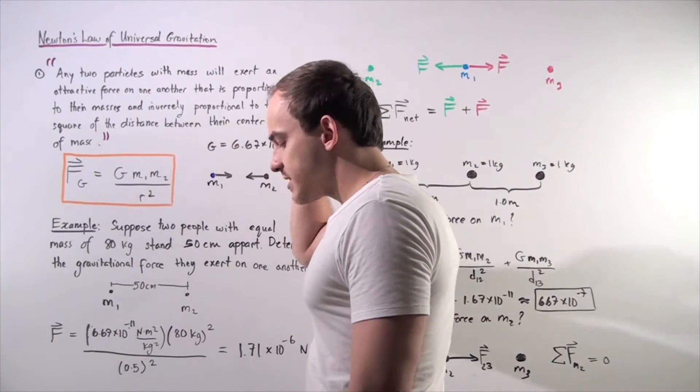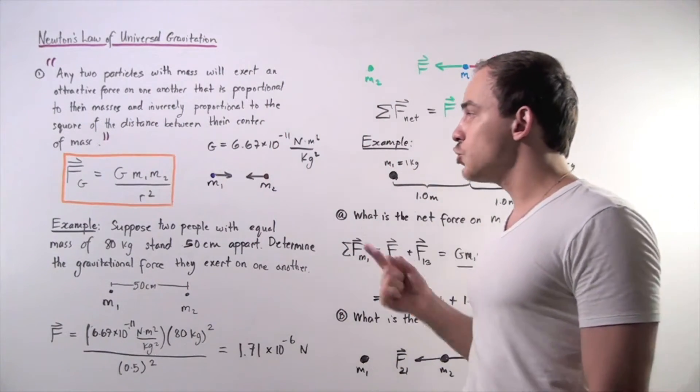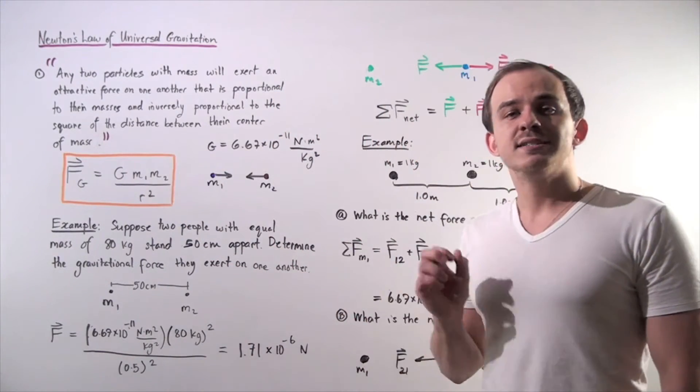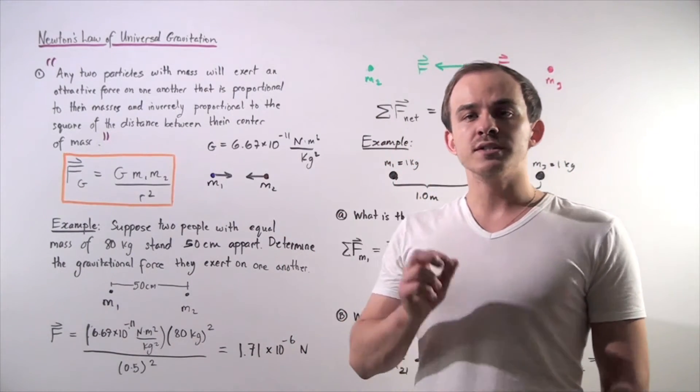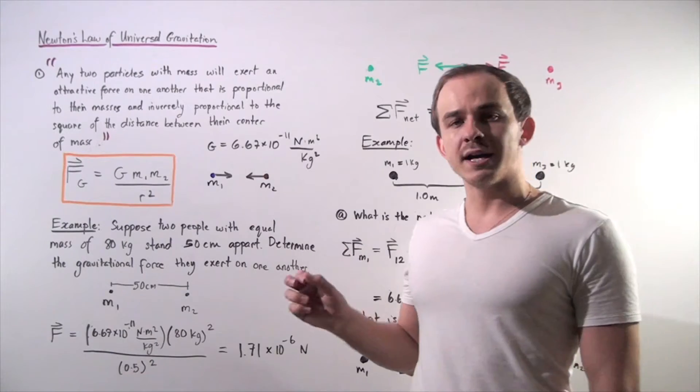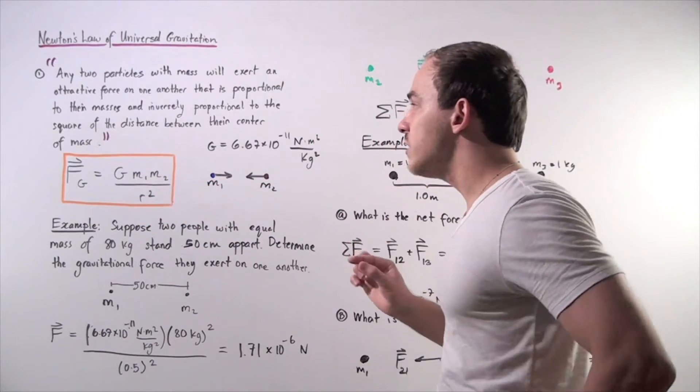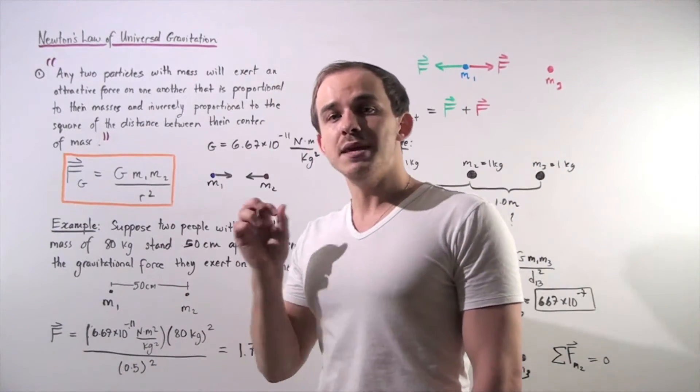Mass one is simply the mass of object one, mass two is simply the mass of object two, both given in kilograms. G is our gravitational constant, 6.67 times 10 to the negative 11 newtons times meters squared divided by kilograms squared, and this is our distance between their center of masses, squared, and the distance is given in meters.